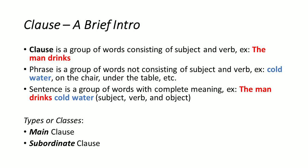A brief introduction before we understand clause itself: we need to see the difference among clause, phrase, and sentence. A clause is a group of words consisting of a subject and a verb. For example, 'the man drinks' — 'the man' is subject, 'drinks' is verb; 'the woman walks' — 'the woman' is subject, 'walks' is verb.